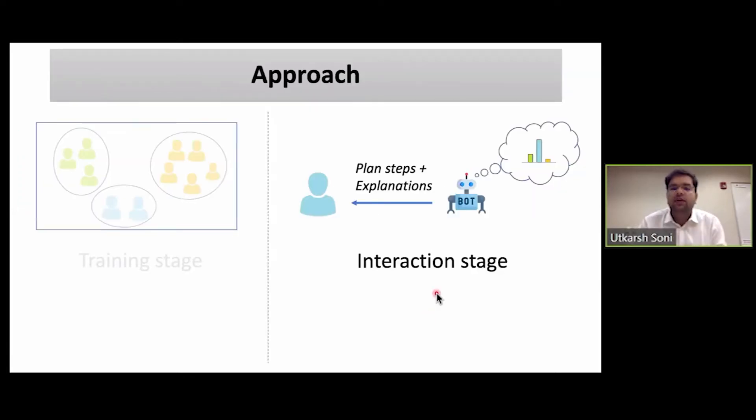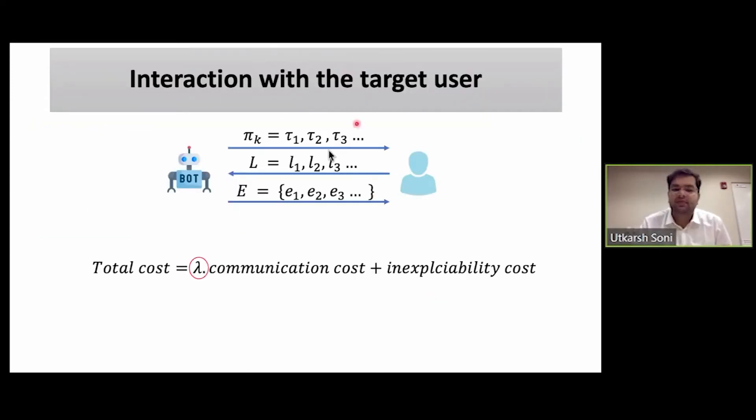Now, coming to the interaction stage, where the robot is going to actually explain the transition plan steps to the user. The interaction happens in multiple steps, where at each step, the robot will show the user a planned prefix and will give them some explanatory messages. And the user will respond as feedback with labels for each of the transitions in the prefix. We define the total cost of this interaction as a linear combination of communication cost and inexplicability cost weighted by some trade-off parameter lambda.